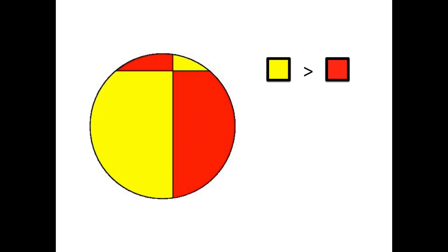The pizza theorem does not work with only four slices. The yellow area is clearly larger than the red area.